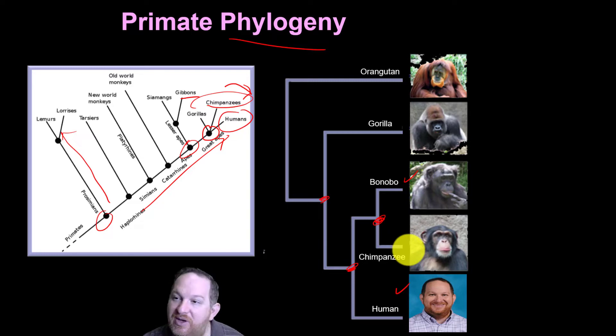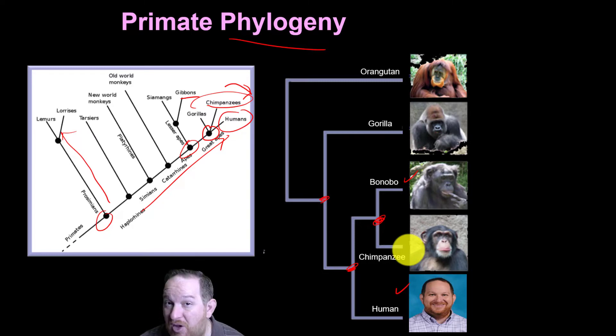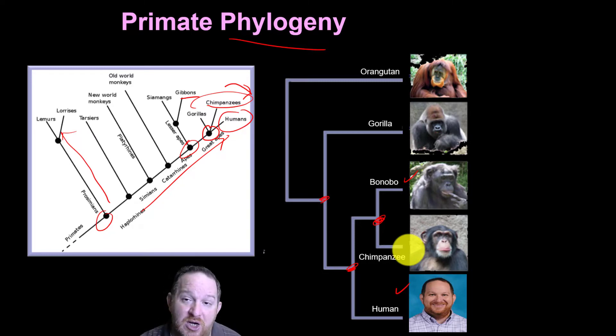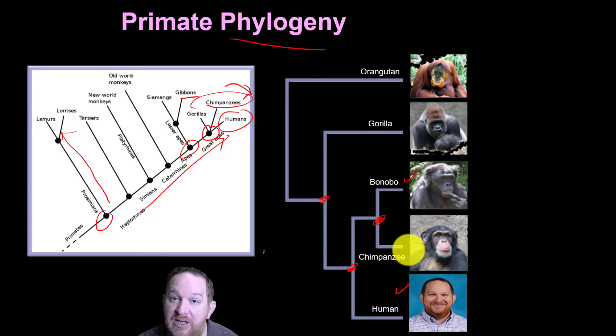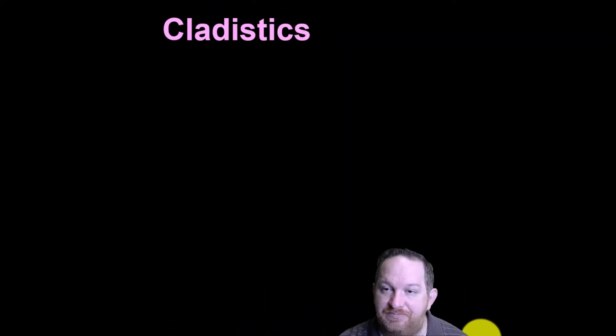The way we can figure that out is, as I mentioned earlier, we can look at structures and morphologies, but we can also — and how we do it most often — look at the molecules. Look at our DNA. How similar is our DNA and our proteins?